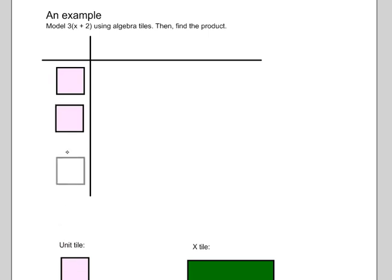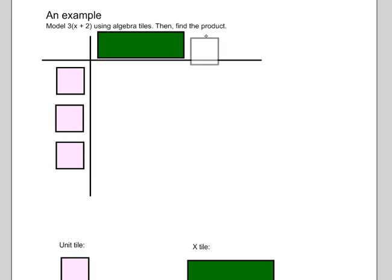And then along the top, because we're multiplying the 3 by x plus 2, we're going to put 1 x tile in and 2 unit tiles.